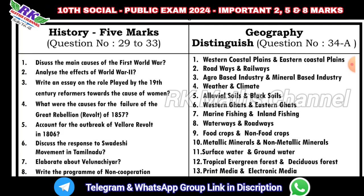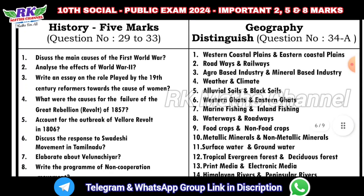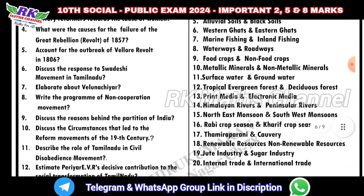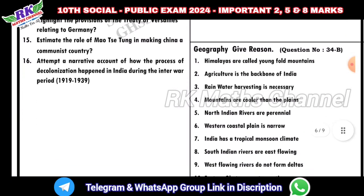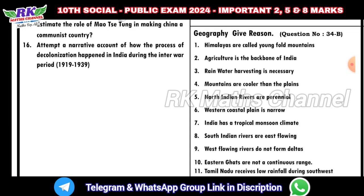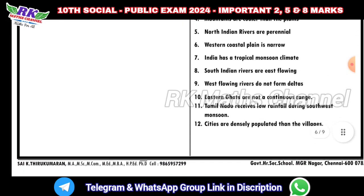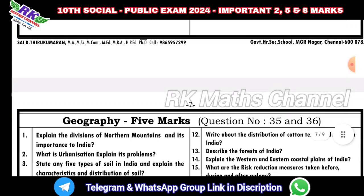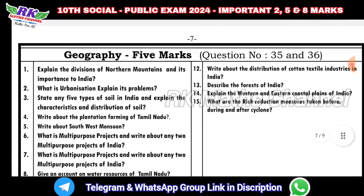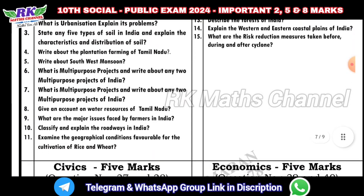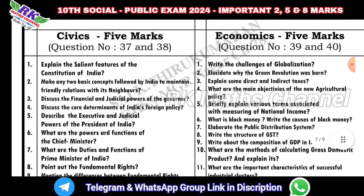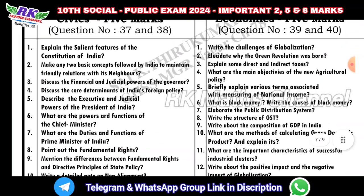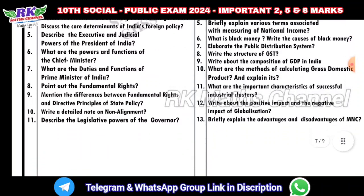For 5-mark questions: geography — 'distinguish between' type question is question number 34. History and geography question number 34. Next, question number 35 and 36. Then question number 37 and 38, and economics question number 39 and 40 — those are the important 5-mark questions.